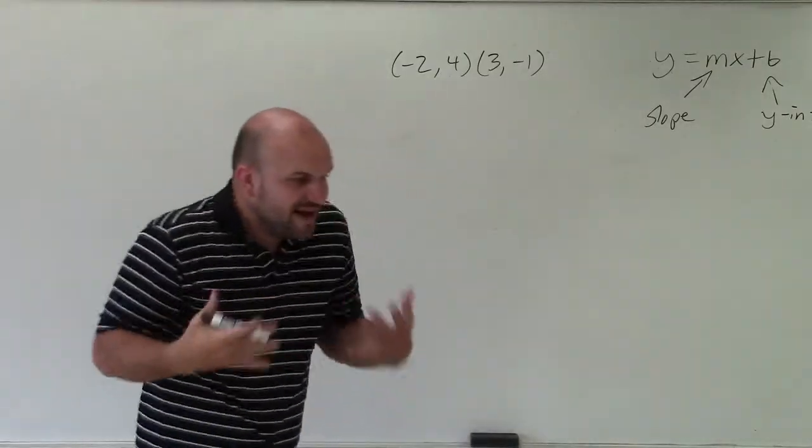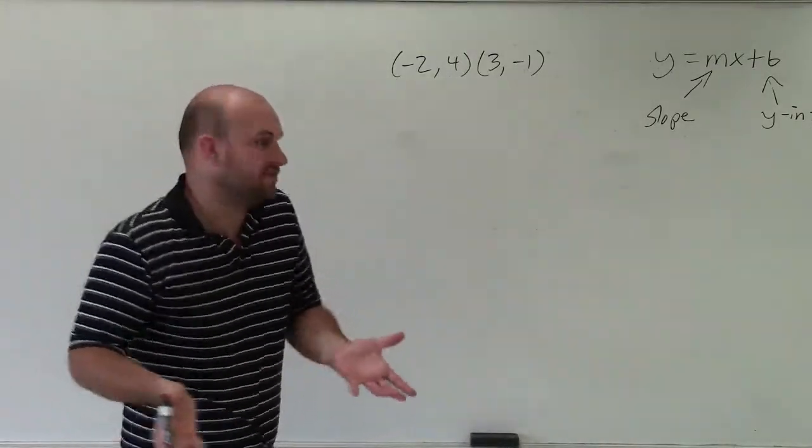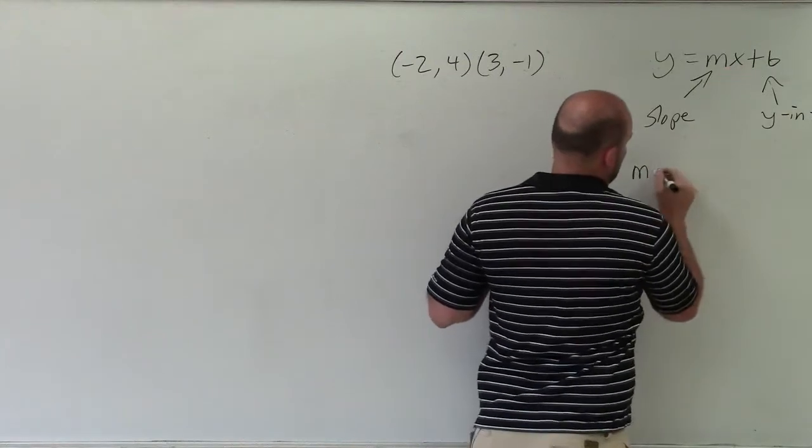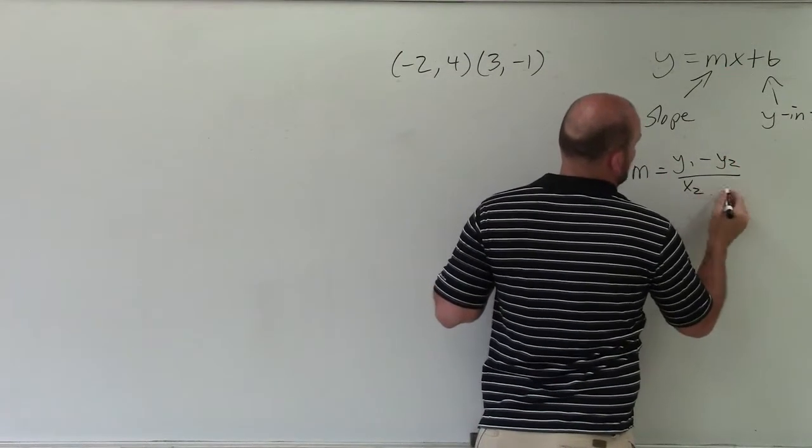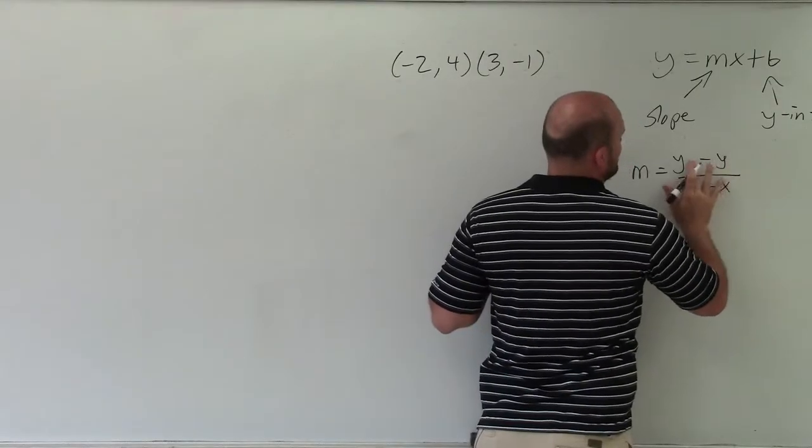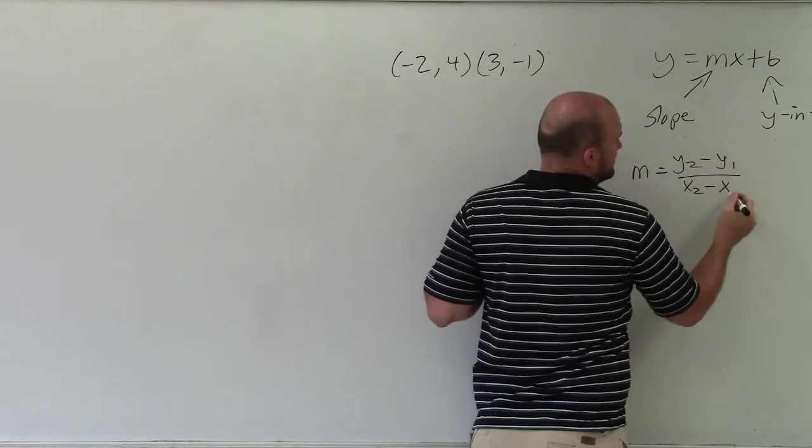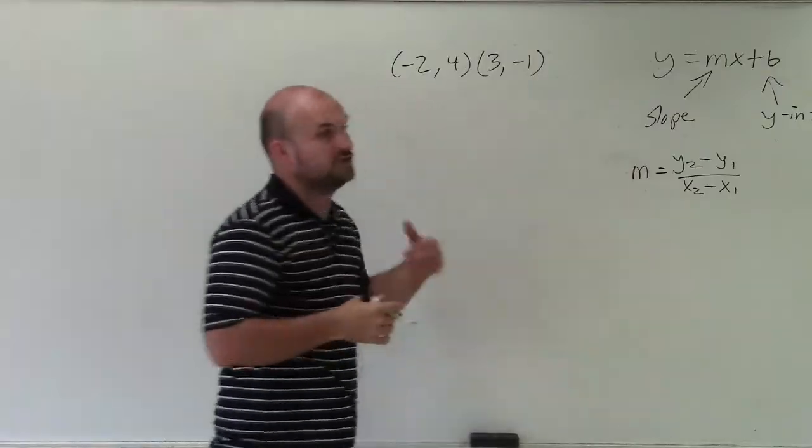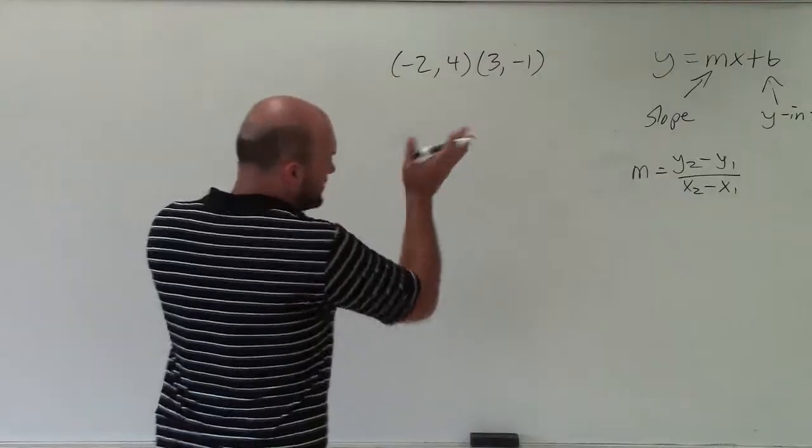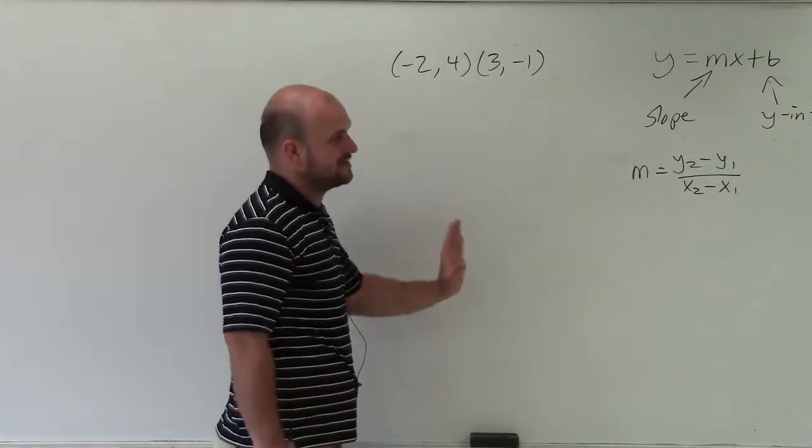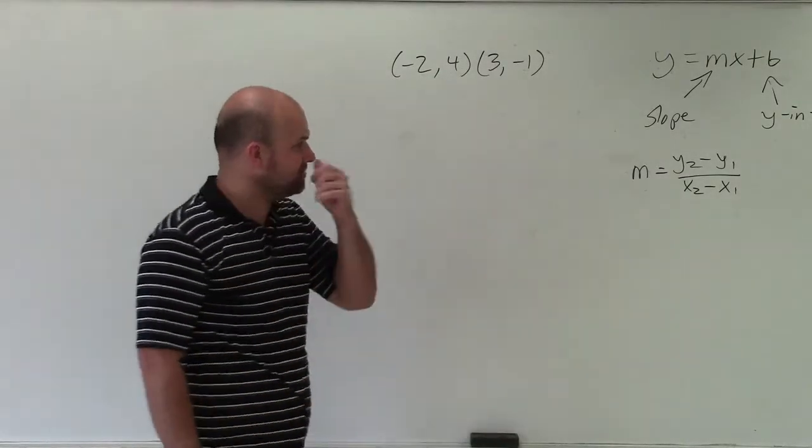To find the slope, we have a formula for that. The formula for slope, which is our m, is equal to the change in y over the change in x. You could write that as y1 minus y2 over x1 minus x2 if you wanted to. It doesn't really matter, as long as you do y1 minus y2 over x1 minus x2. But I prefer to keep it in this form: y2 minus y1 over x2 minus x1.